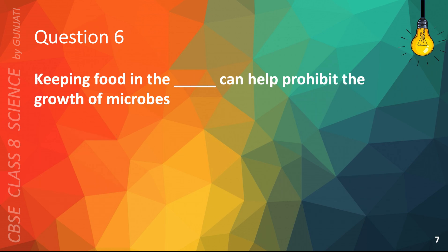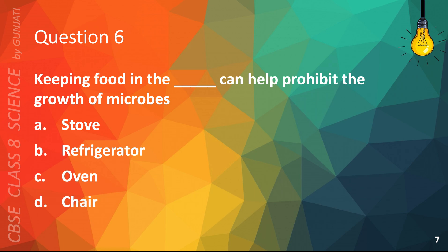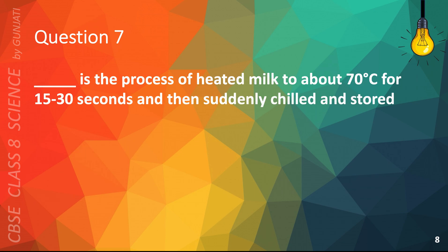Question 6. Keeping food in the blank can help prohibit the growth of microbes. A. Stove, B. Refrigerator, C. Oven, D. Chair. The correct answer is B. Refrigerator.